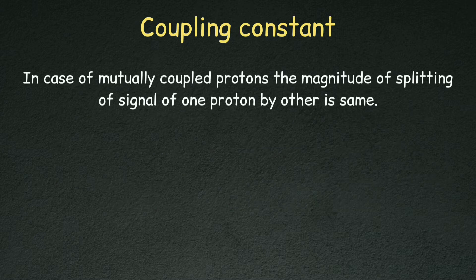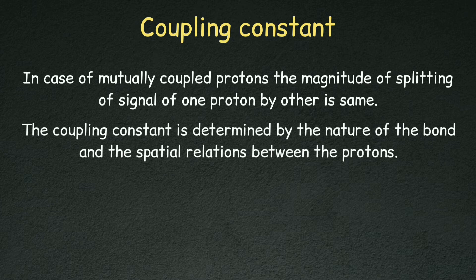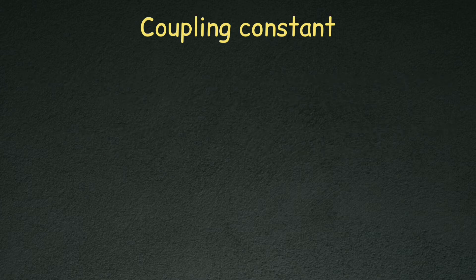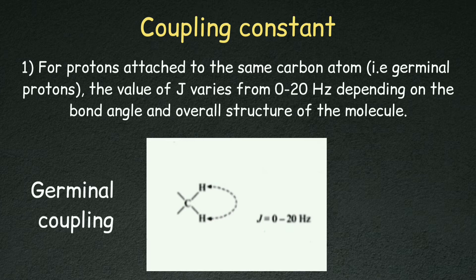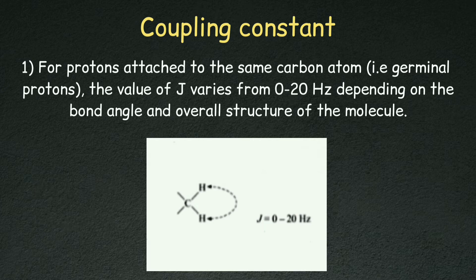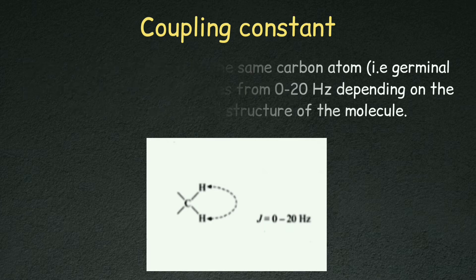In the case of mutually coupled protons, the magnitude of splitting of signals is the same. This depends on the nature of the bond and spatial relations between protons. When two protons are on the same carbon atom, we call them geminal protons, and their coupling is called geminal coupling.